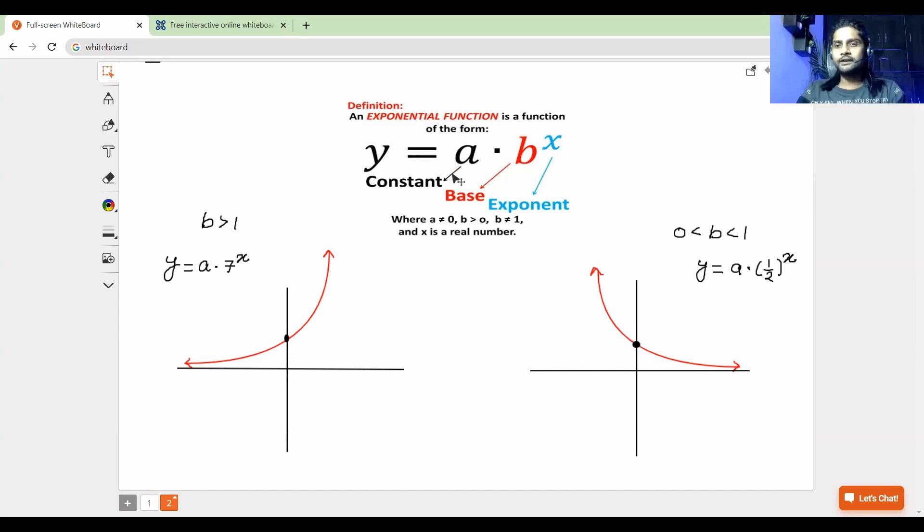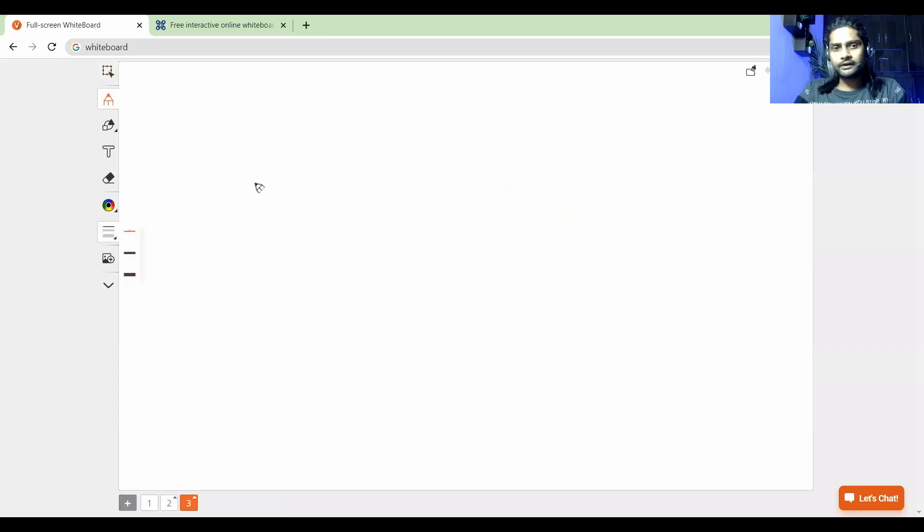Basically, this is the value of a, and that is also called the y-intercept. Why is it the y-intercept? Because that's where the graph intersects the y-axis. And let me now elaborate it a bit more. Let's say I have a function y = a·b^x.